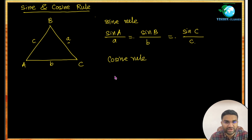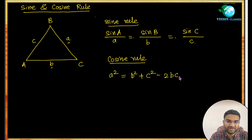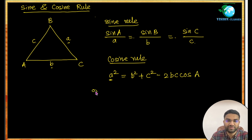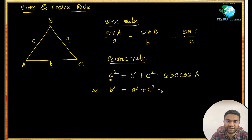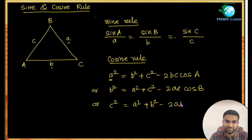The cosine rule is used to find any side. a² = b² + c² − 2bc·cos A. Similarly, b² = a² + c² − 2ac·cos B. And c² = a² + b² − 2ab·cos C.